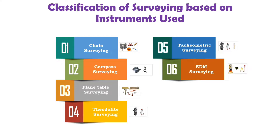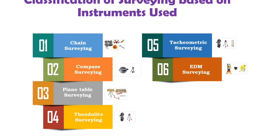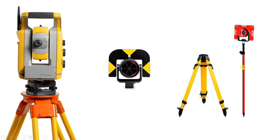The next is EDM surveying. In EDM surveying, all kinds of measurements — length, angle, and coordinates — are taken with the help of EDM equipment like a total station.